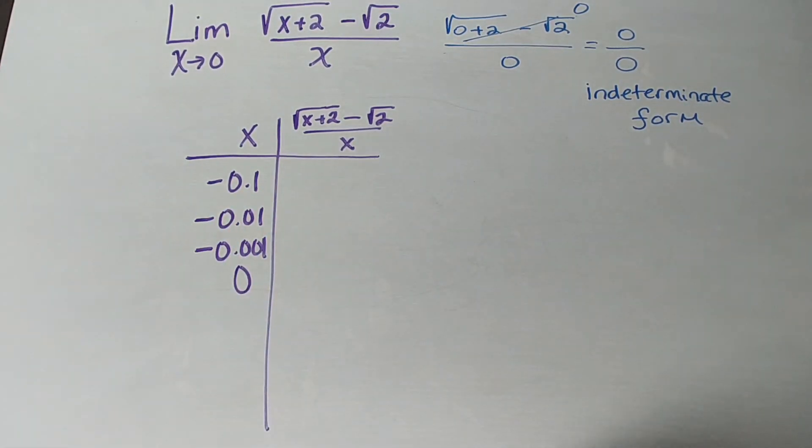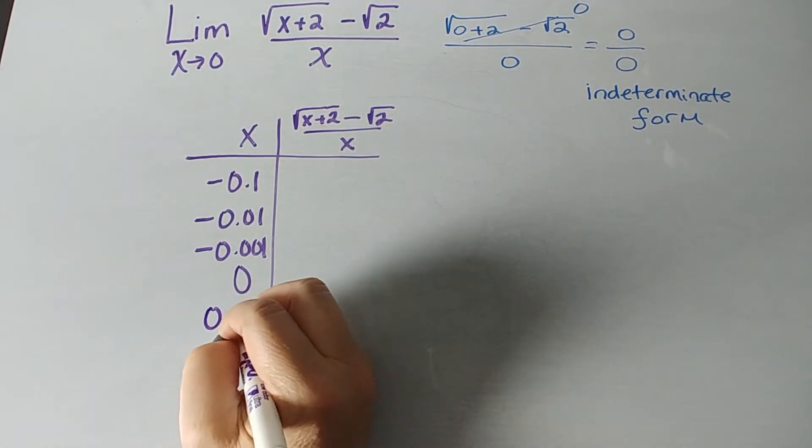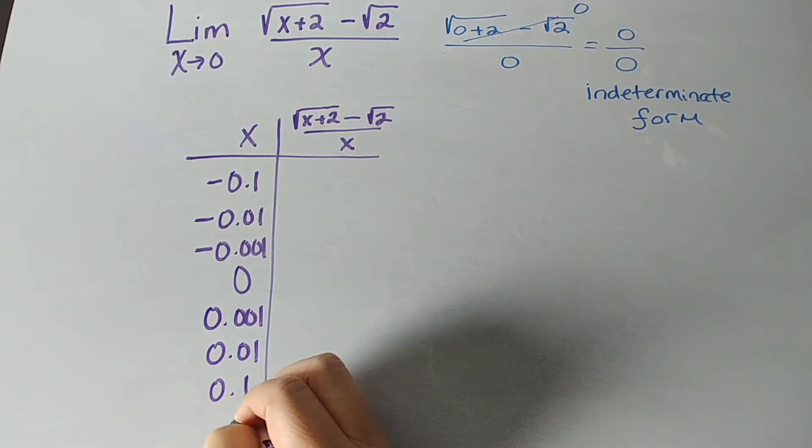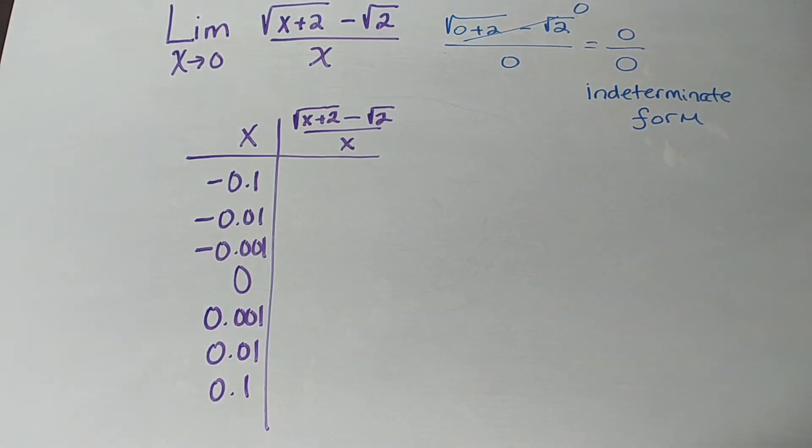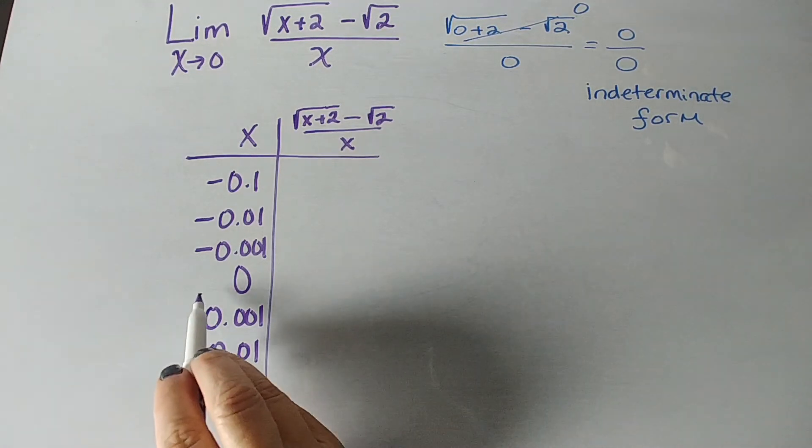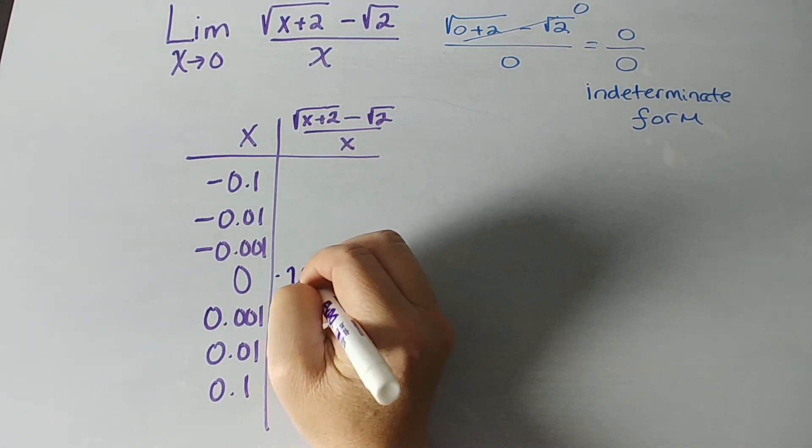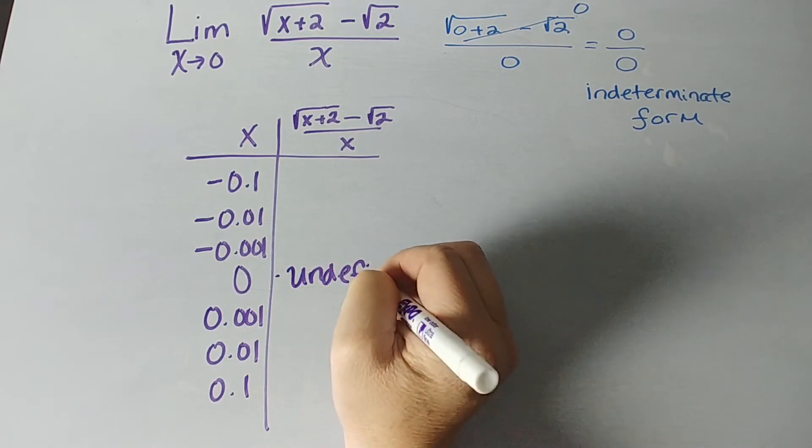Since I've run out of room, I'm going to stop there. And then, we're going to do the same thing on the positive side, 0.001, 0.01, and 0.1. And we are going to see what this function approximates as you get closer and closer to 0. We know there will be nothing here. Okay, this is undefined. So, we can just go ahead and put that in right now.